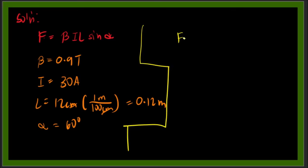Substituting, we have F equals beta which is 0.9 tesla, times I which is 30 amperes, times 0.12 meters, times sine 60 degrees. Now we will use our calculator.